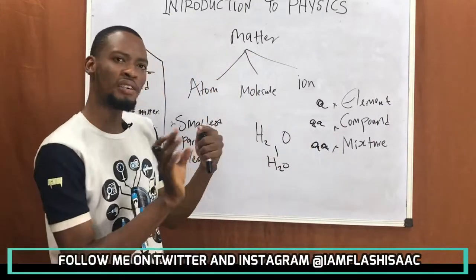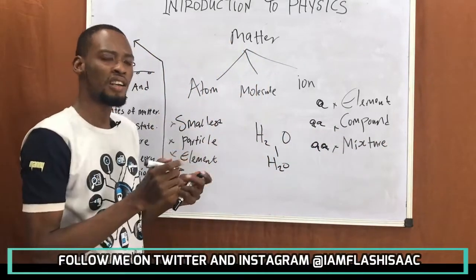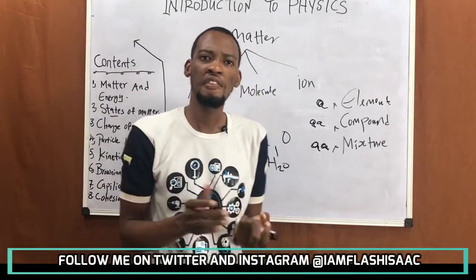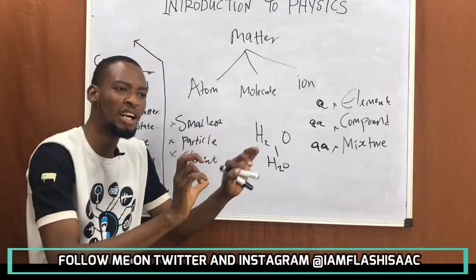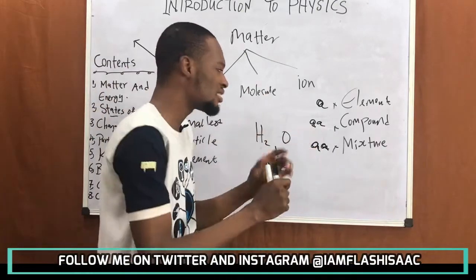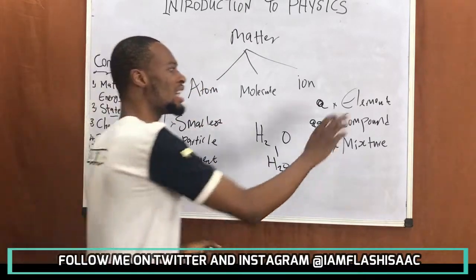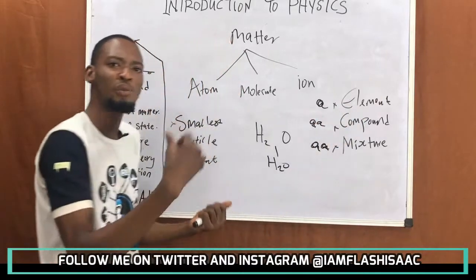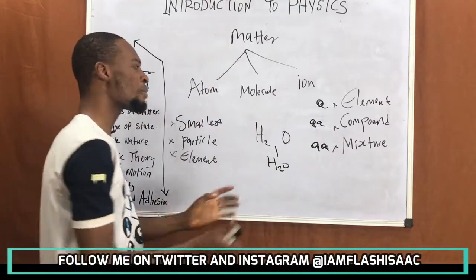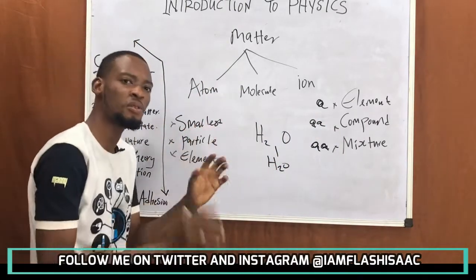In my video on separation of mixtures I explained how you can separate all those things. Even crude oil — in a refinery you separate the mixture into its components. So mixtures are physically combined and can be separated easily, while compounds cannot. An element contains only one type of atom; a compound contains more than one and requires a chemical reaction; a mixture is a physical combination.